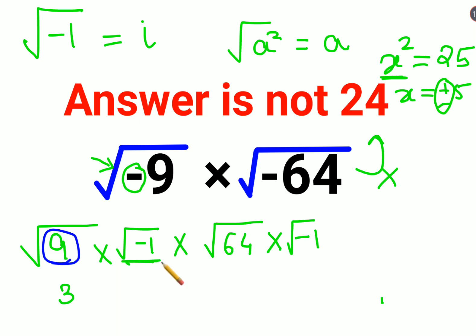And now we know that root of negative 1 is i, into root of 64 is 8, into negative 1, root of negative 1 is again i. So this gets you basically 24.